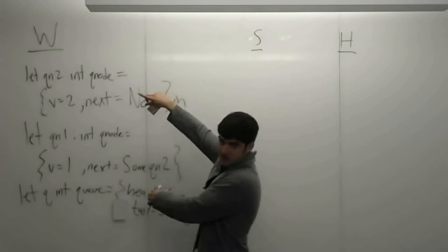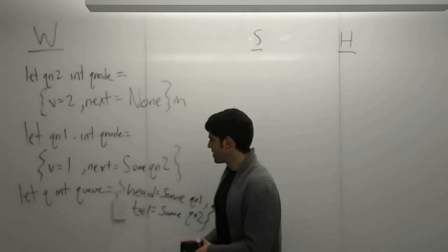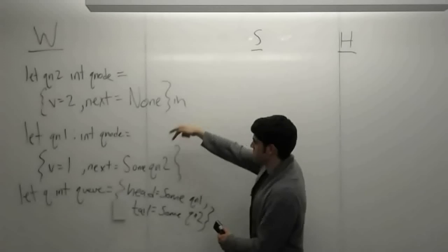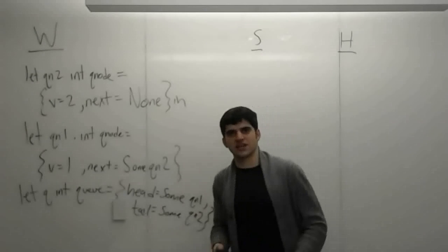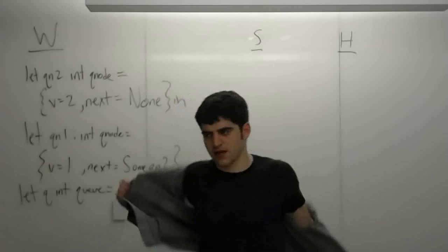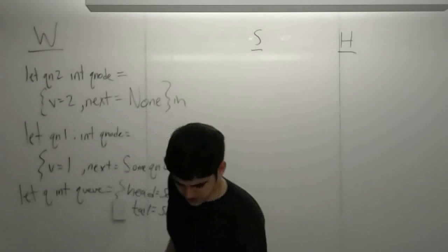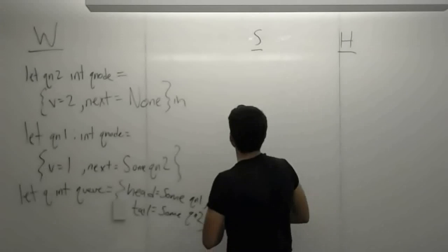Sum, none, these are option types, because there might be nothing there. Then we have q, which is an int q, with head equals sum qn1, and tail equals sum qn2. So let's get through this on the ASM. And whenever I get to the ASM, everybody starts sweating.